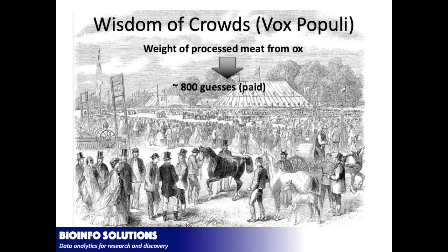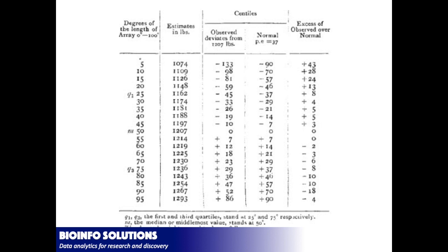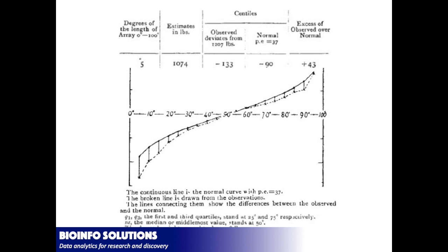Galton saw this and thought it would be proof of his eugenics theory — that the experts would be way more accurate than the crowd, the lay people. So he had a small group of experts and a large group of lay people making this guess. He took everybody's guesses — he was knighted by then, so he could get whatever he wanted. He looked at everybody's answers, and no one actually got the weight of the bull right. A lot of people were too high, a lot too low. And even his experts weren't accurate.